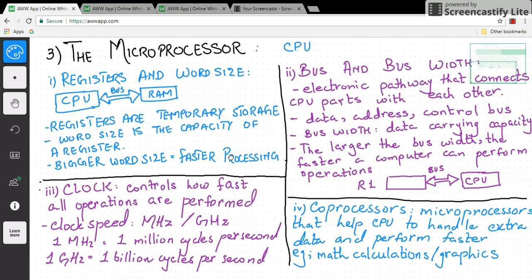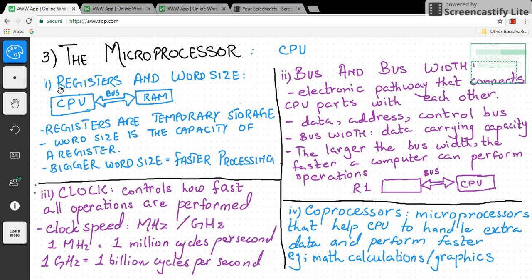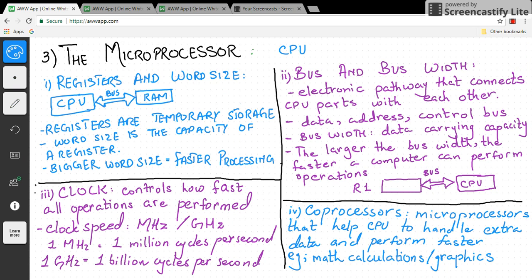The third component is the microprocessor, which we call CPU. Our microprocessor has 4 main features. The first feature is registers and word size. Registers are temporary storage. RAM is memory storage and CPU also has memory. Registers work between CPU and RAM so that we can save time and work quickly.